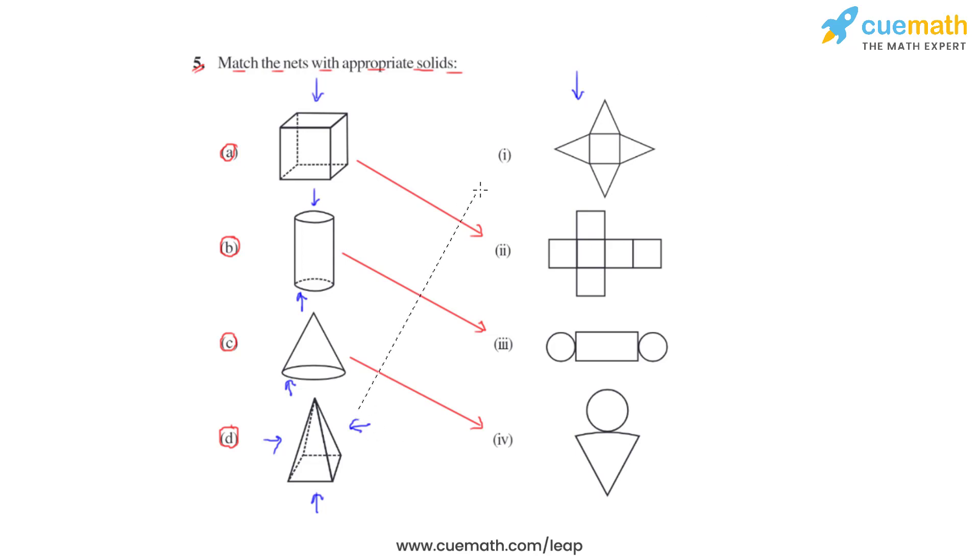Hence we can match this one with the first option to say that this is the appropriate net for this given solid. These are the ways through which we can match these solids with their respective nets. This is how we are going to answer question number five.